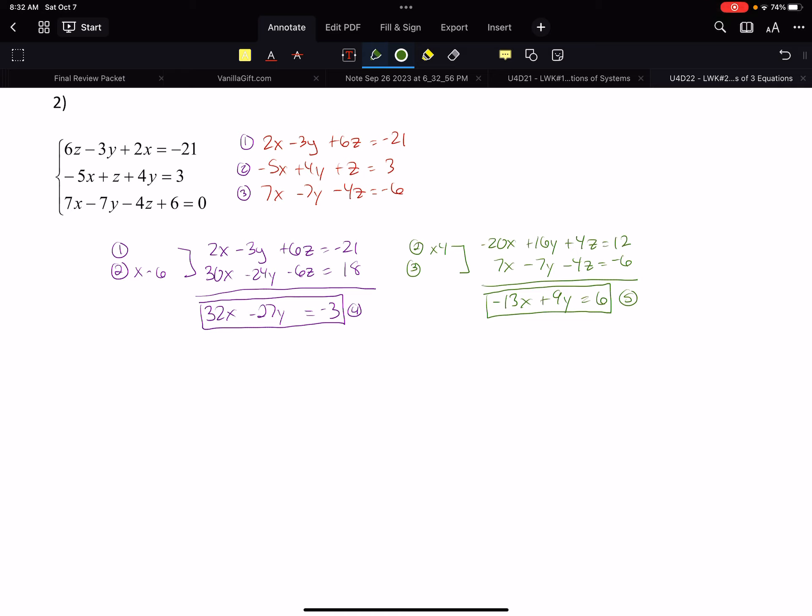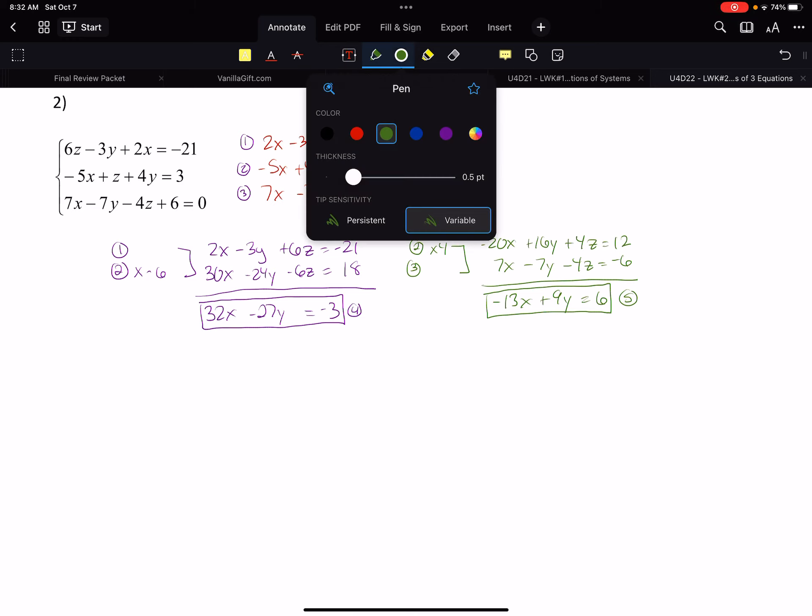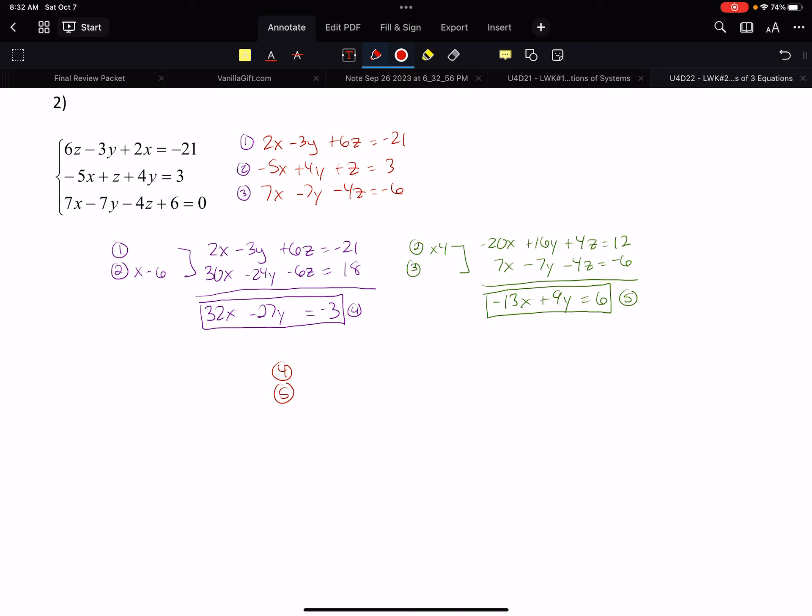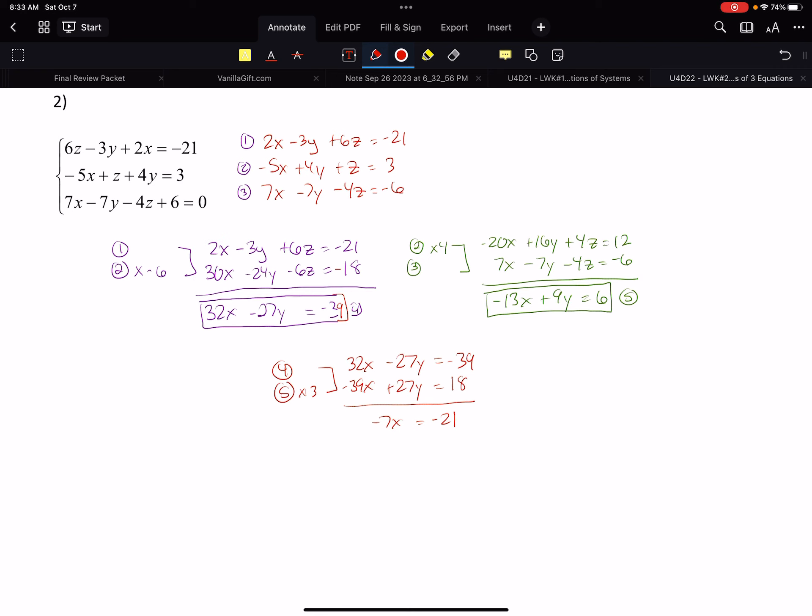What's my easy method? Let's get rid of the y's. If I take equation 4 and 5, not doing anything with equation 4, but equation 5 times 3. So 32x minus 27y equals negative 3, and I'd have negative 39x plus 27y equals 18. Y's are gone. I get negative 7x equals negative 21. I knew I made a little error - this should be 39, and this would be negative 18. And we would get x equals 3.